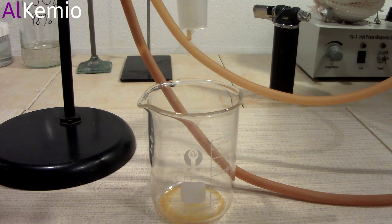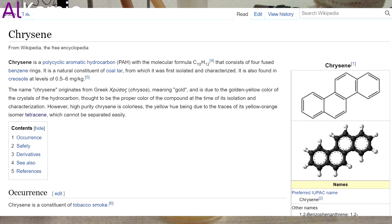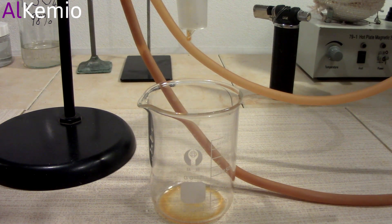The orange impurity you can see in it is probably tetracene with some chrysene. We will get rid of them later.